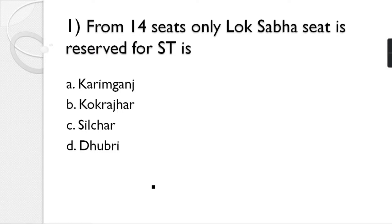Question number 1: From the 14 Lok Sabha seats, only one seat is reserved for ST (Scheduled Tribe). The options are: Karimganj, Kokrajhar, Silchar, Dobri. The correct answer is Karimganj.